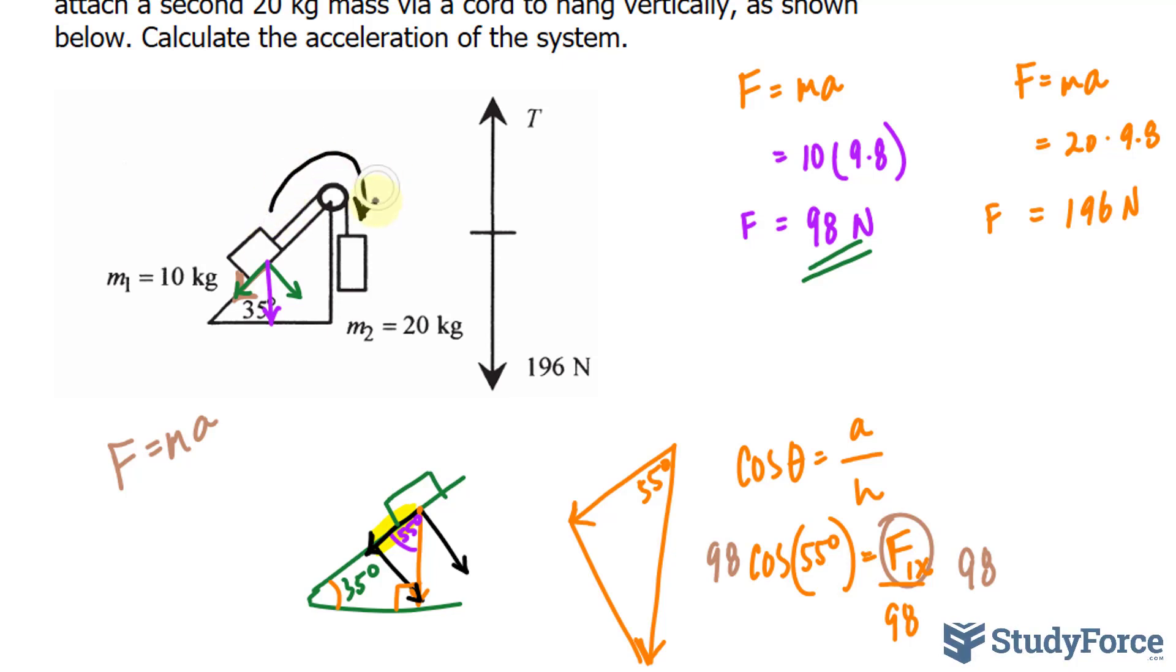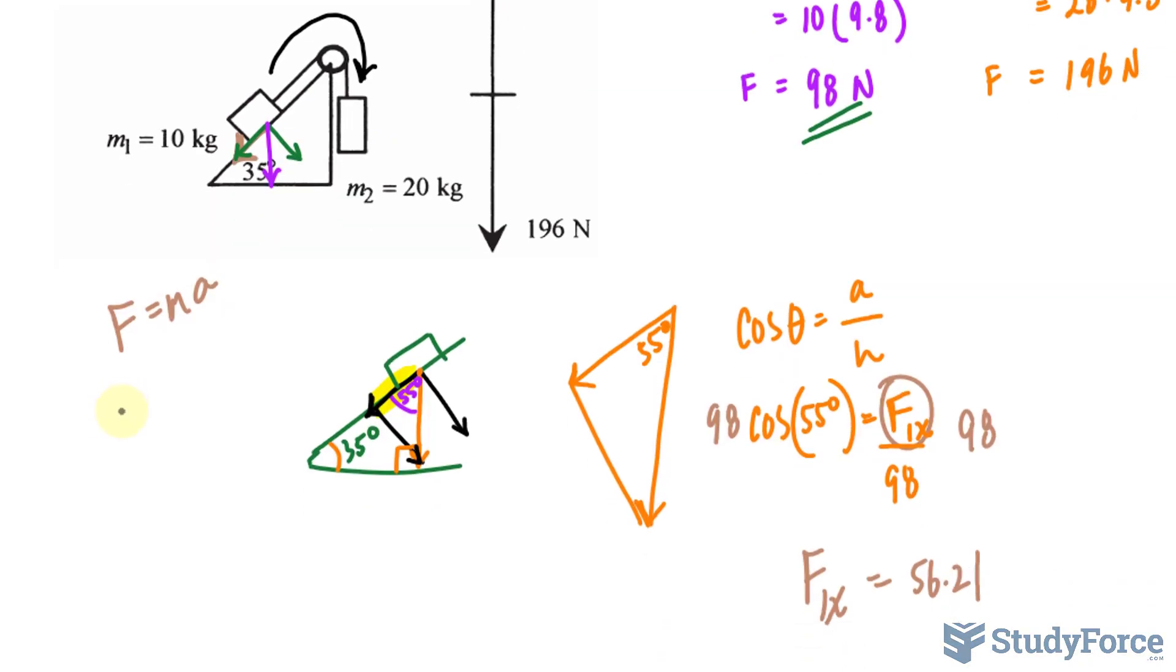So if I assume that it's going this way and taking into account the tension, I can write down the tension, which I don't know, minus the force going this way—we found the force to be 56.21—equals a mass of 10 kilograms times the acceleration, which is what we're trying to find.